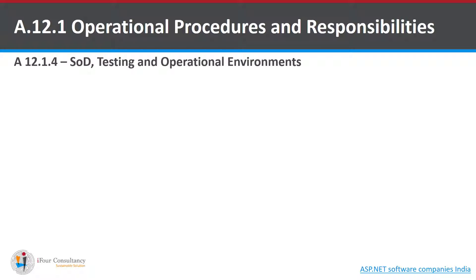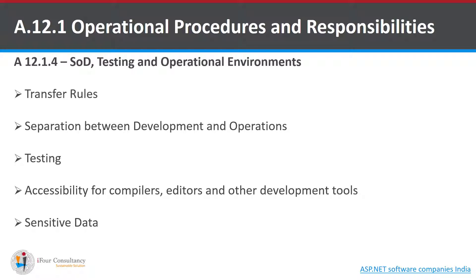The last control under Operational Procedures and Responsibilities is Separation of Development, Testing, and Operational Environments. It states that development, testing, and operational environments shall be separated to reduce the risk of unauthorized access or changes to the operational environment. Development and operational regions must be stored separately. Before moving code from development to operations, it must be thoroughly tested. Accessibility for compilers, editors, and other development tools must be verified before implementing them. Sensitive data must be protected and only people with the right authority can use it.